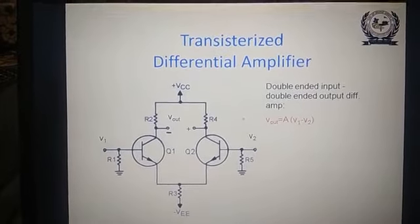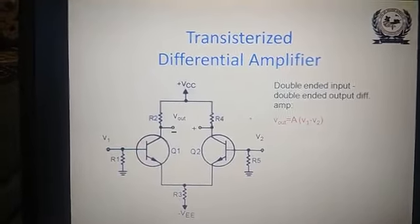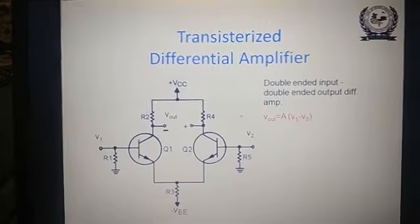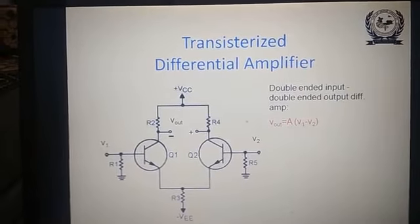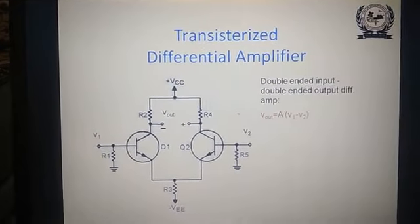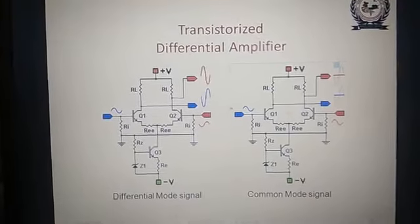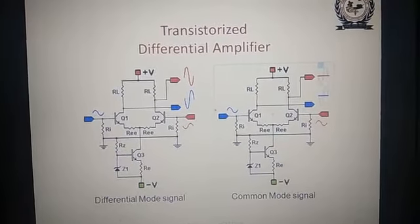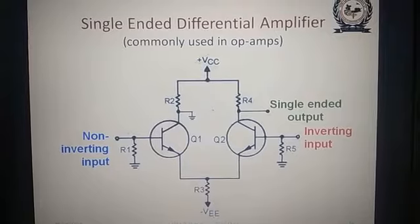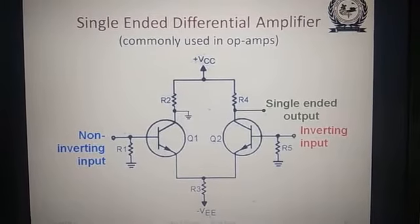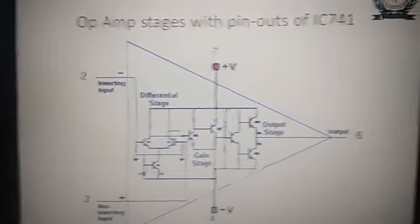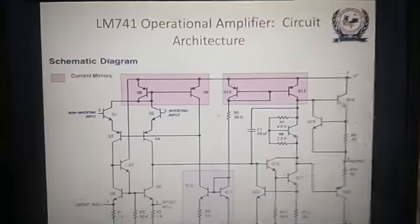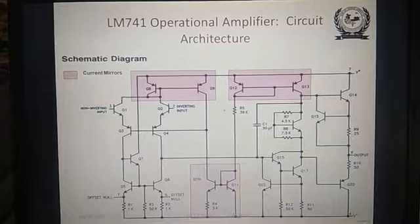There are four configurations of differential amplifier: double input balanced output, single input balanced output, double input unbalanced output, and single input unbalanced output. These are the four configurations we have seen. This is the first circuit of the operational amplifier IC differential amplifier with constant current source, and the second stage is the additional gain stage, which is also a differential amplifier. These are the various stages of the µA741 op-amp IC, and this is the total architecture of the LM741 op-amp.